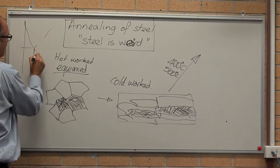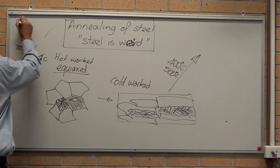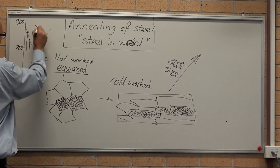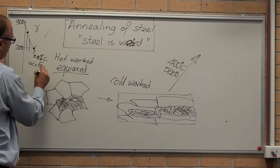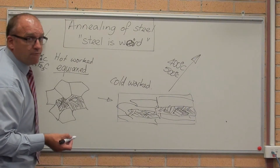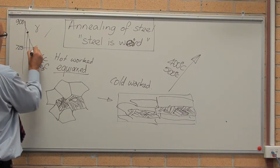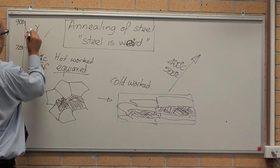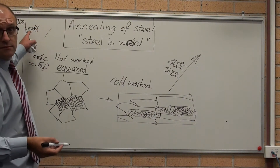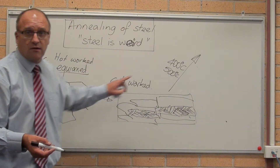That's 0.8% carbon — that's 723 degrees, and that's 900 degrees on the diagram. For a 0.2% carbon steel to fully redissolve that carbon back into the austenite, I need to heat it up to a temperature of around 860 to 870 degrees centigrade.